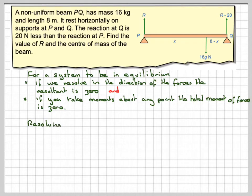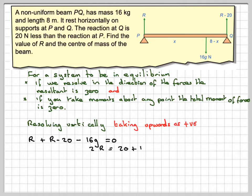Resolving vertically, taking upwards as positive. Upwards we've got R plus R minus 20, and downwards we've got minus 16g, which is the weight of the beam. This gives 2R equals 20 plus 16g. Therefore R equals 10 plus 8g, which is 88.4 newtons.